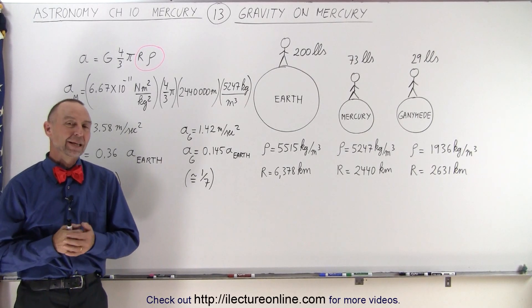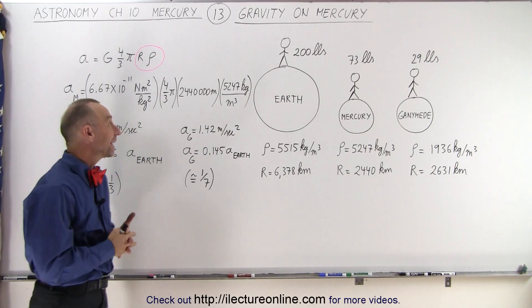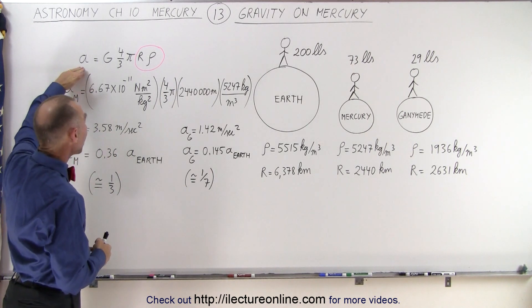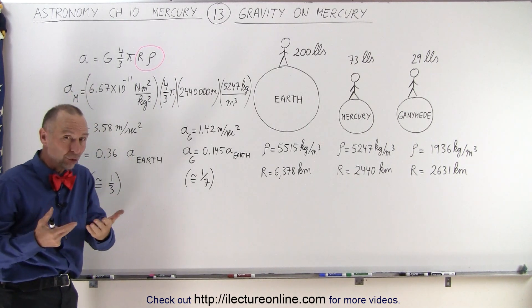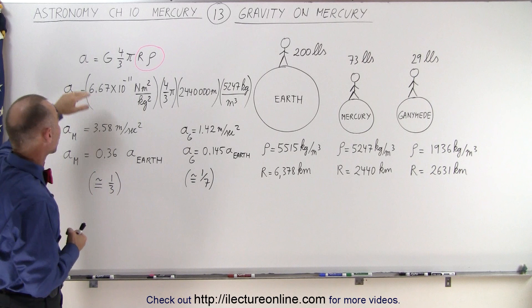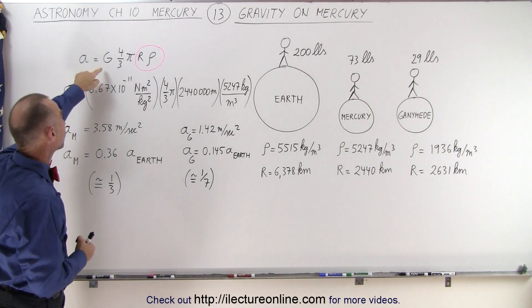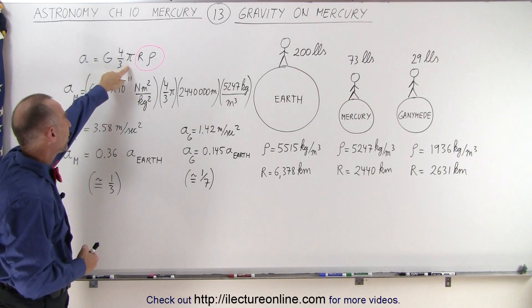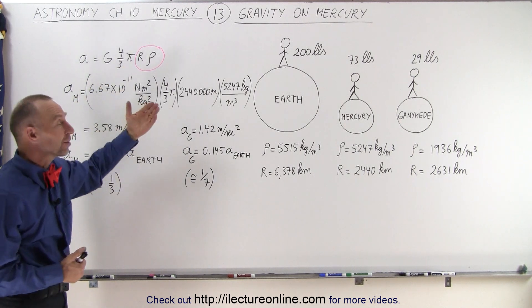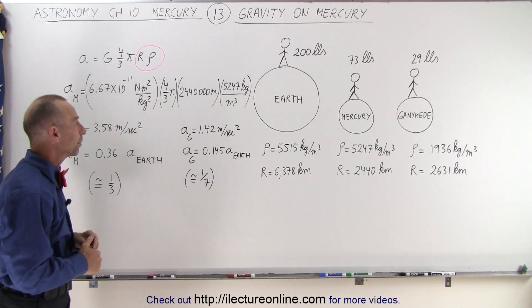Welcome to our lecture online. In the previous video we saw that the acceleration due to gravity, which is essentially proportional to the gravitational force on the surface of the planet, is equal to the gravitational constant times four-thirds pi times the radius of the planet times the density of the planet.